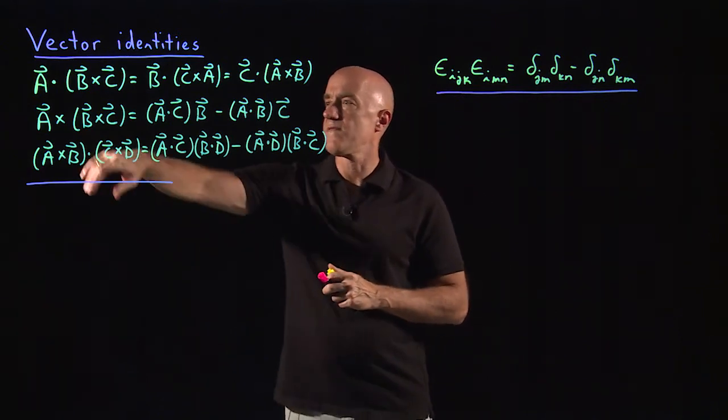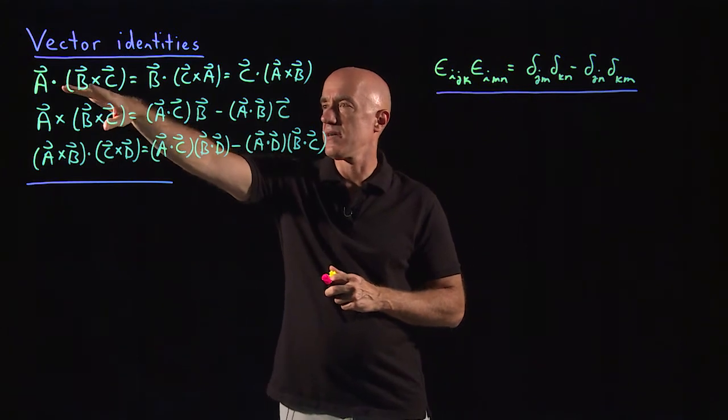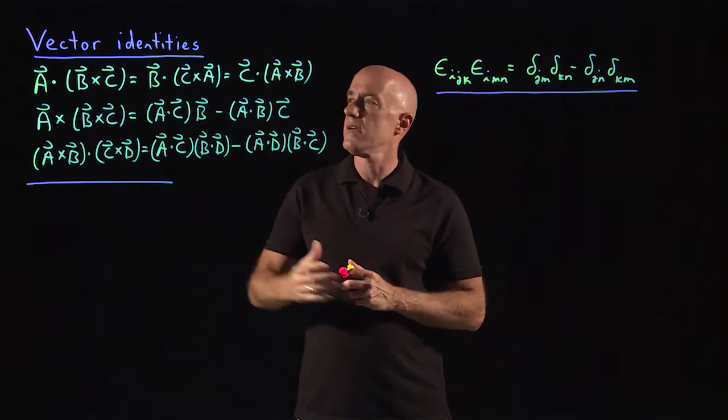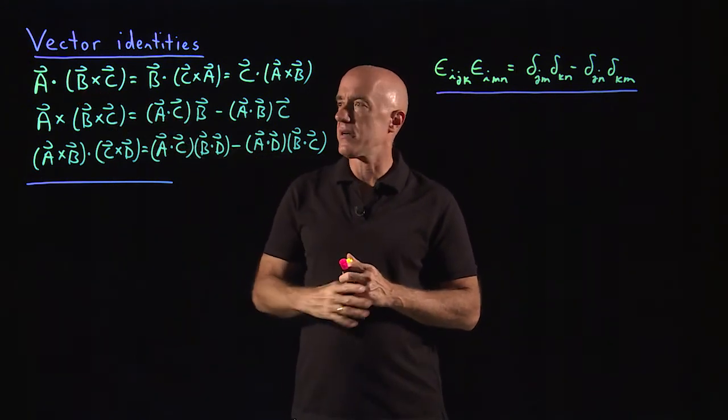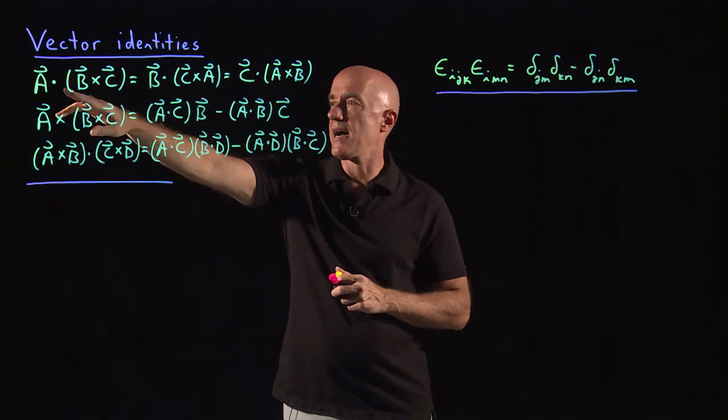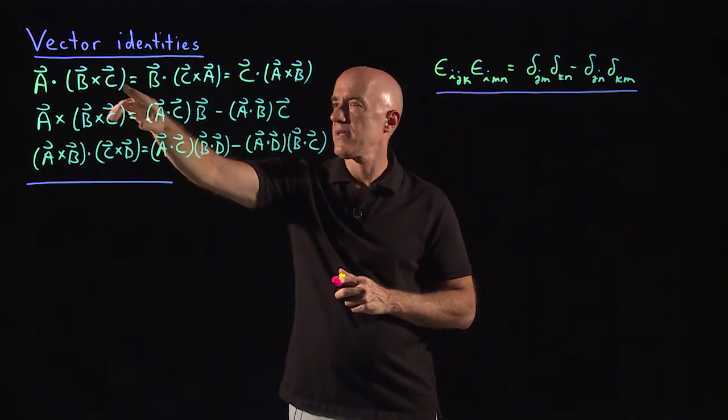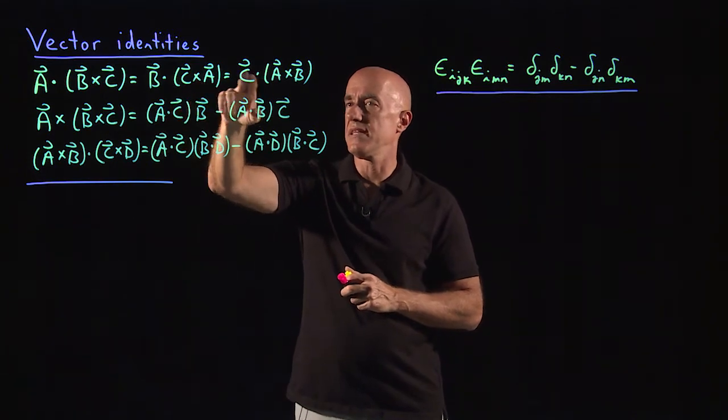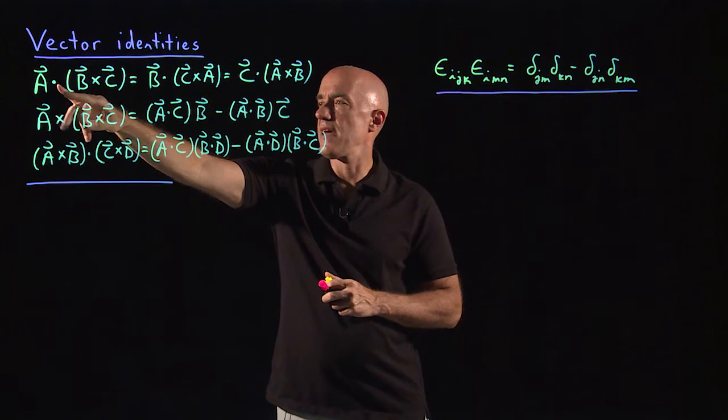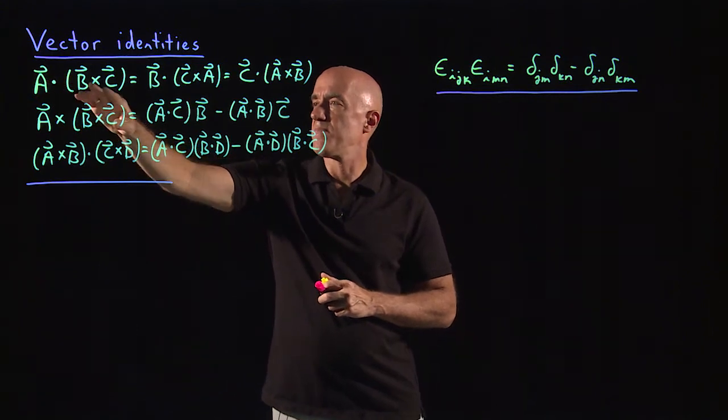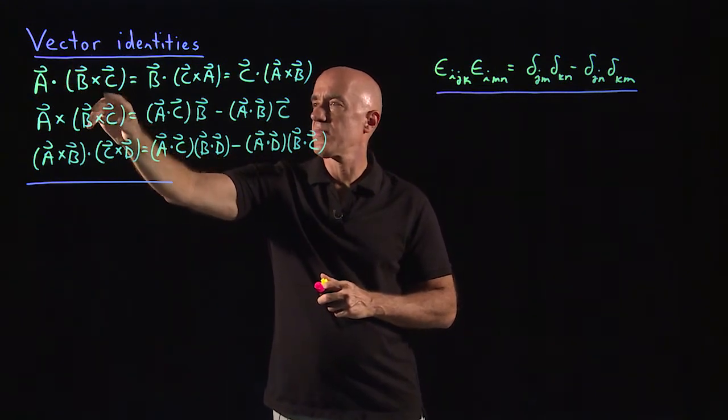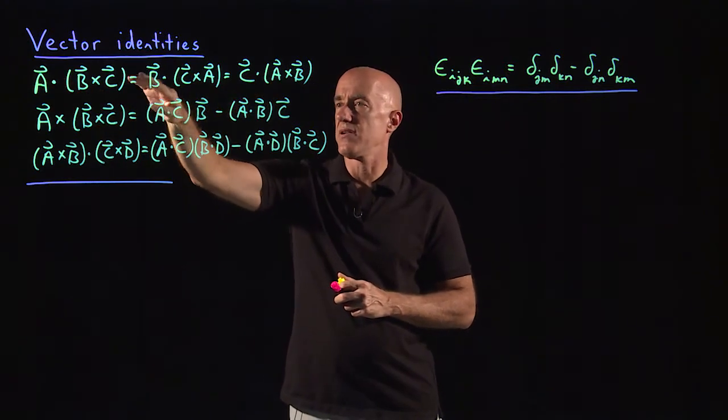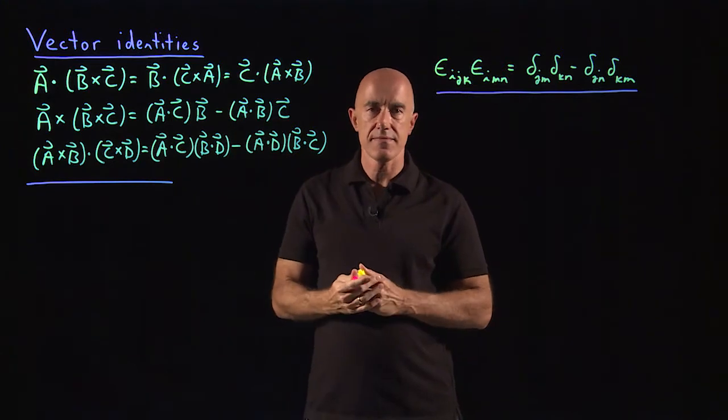Nobody memorizes these identities. They're usually found on the inside cover of a textbook. But I wanted to show you at least how they're proved using these new symbols that we learned in the last lecture. So the first identity is each term here is a scalar, because the dot product is a scalar product. But it says that A·(B×C) = B·(C×A) = C·(A×B). So you see that this A·(B×C) is cyclical. You can pull the B out and then move the A in. You can pull the C out and then move the B in. That's an identity.